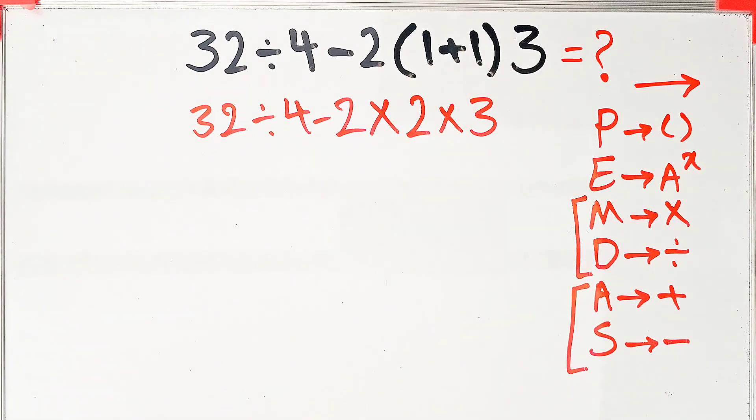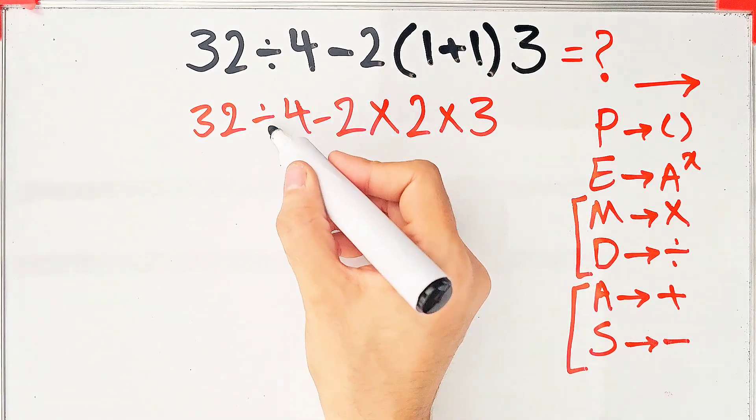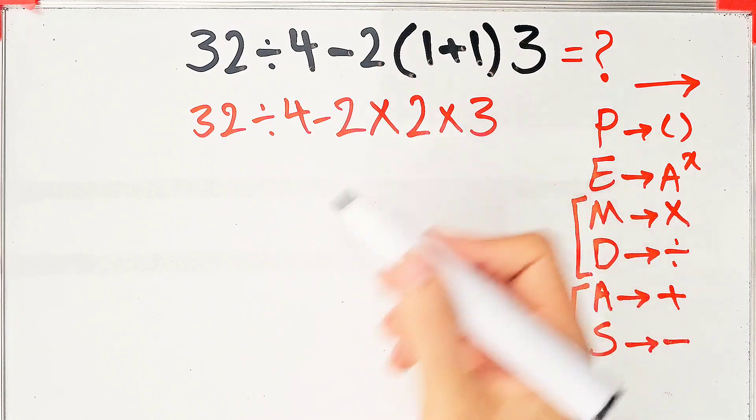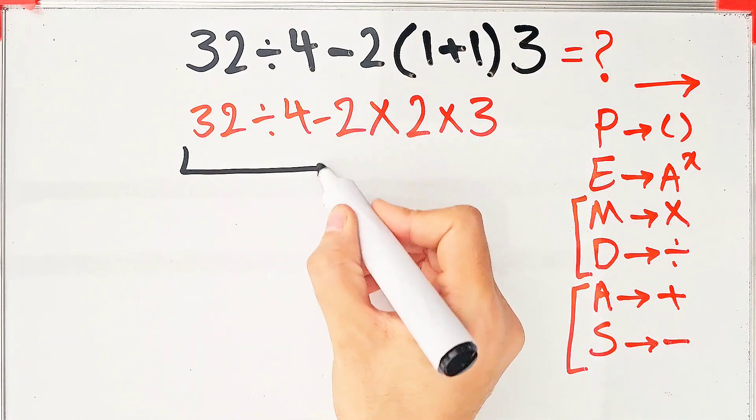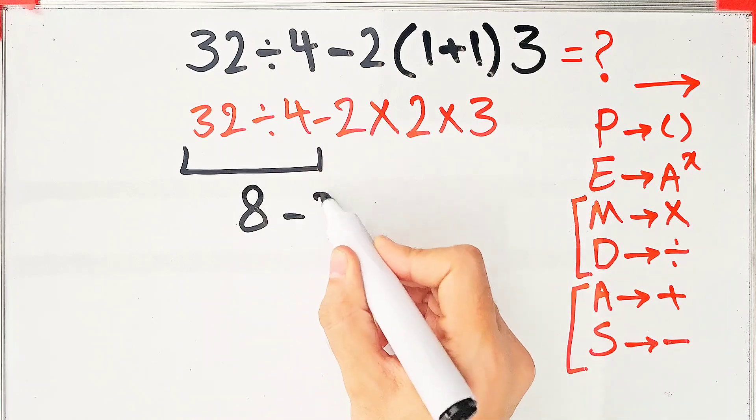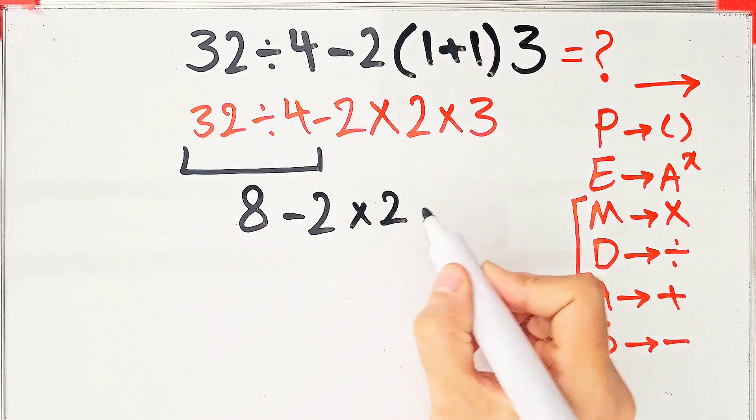In this question, we have division, subtraction, and multiplication. First we do this division: 32 divided by 4 equals 8. Now we have 8 minus 2 times 2, then times 3.